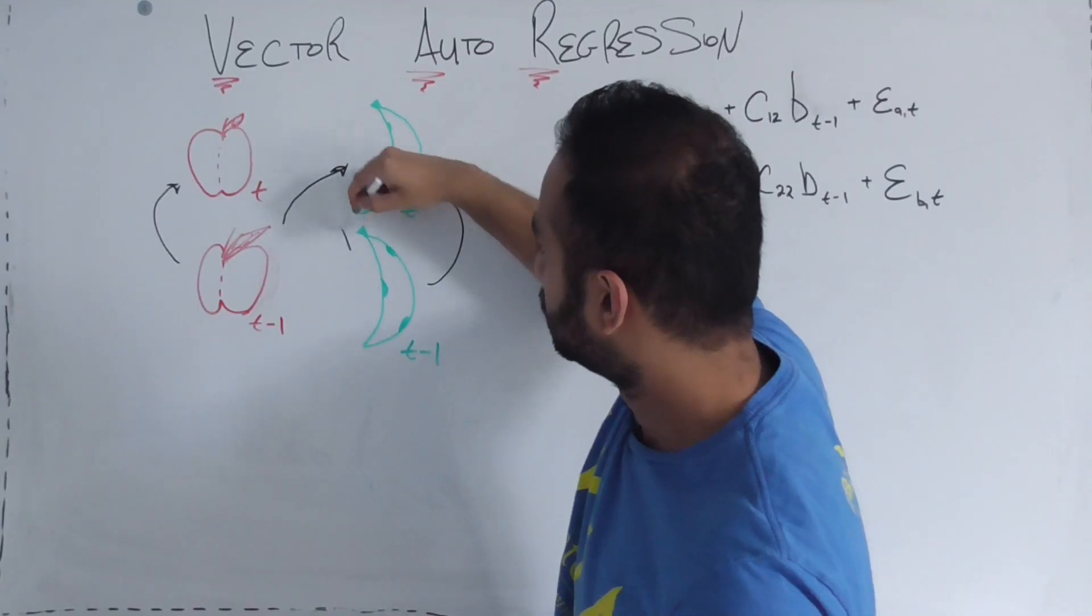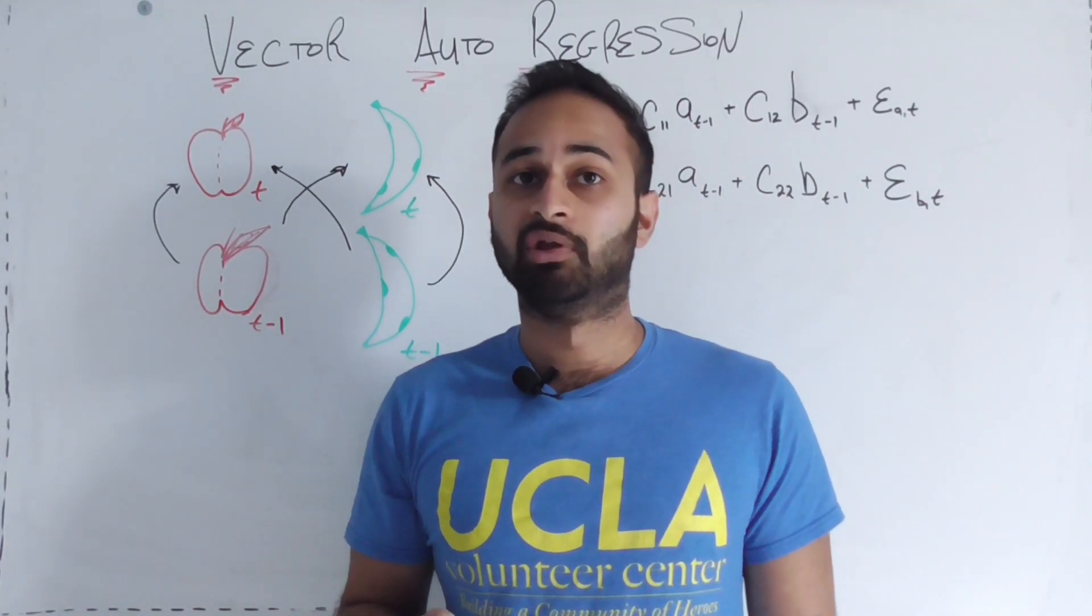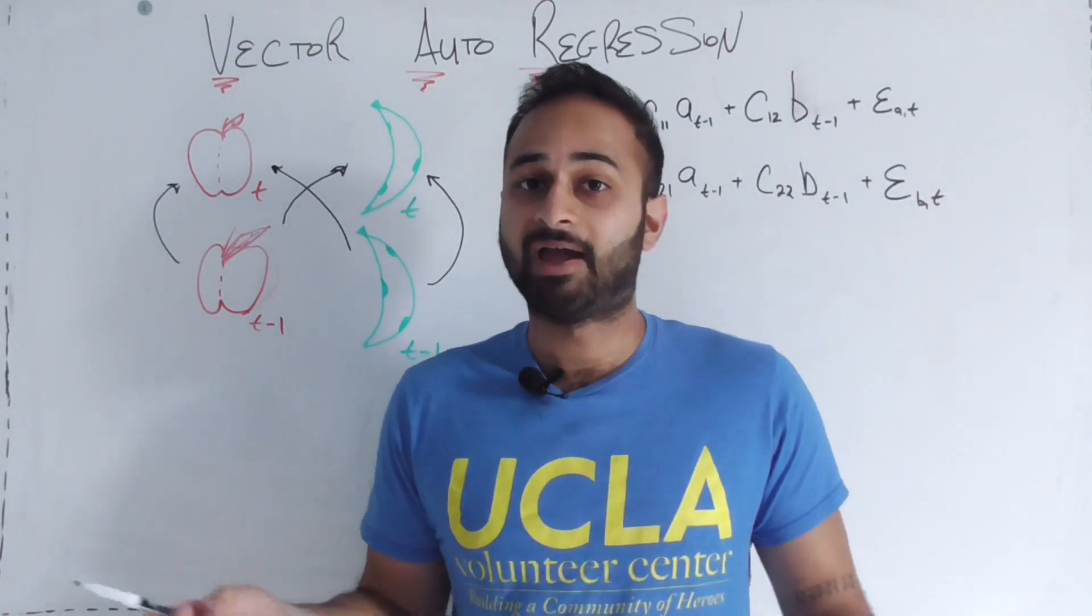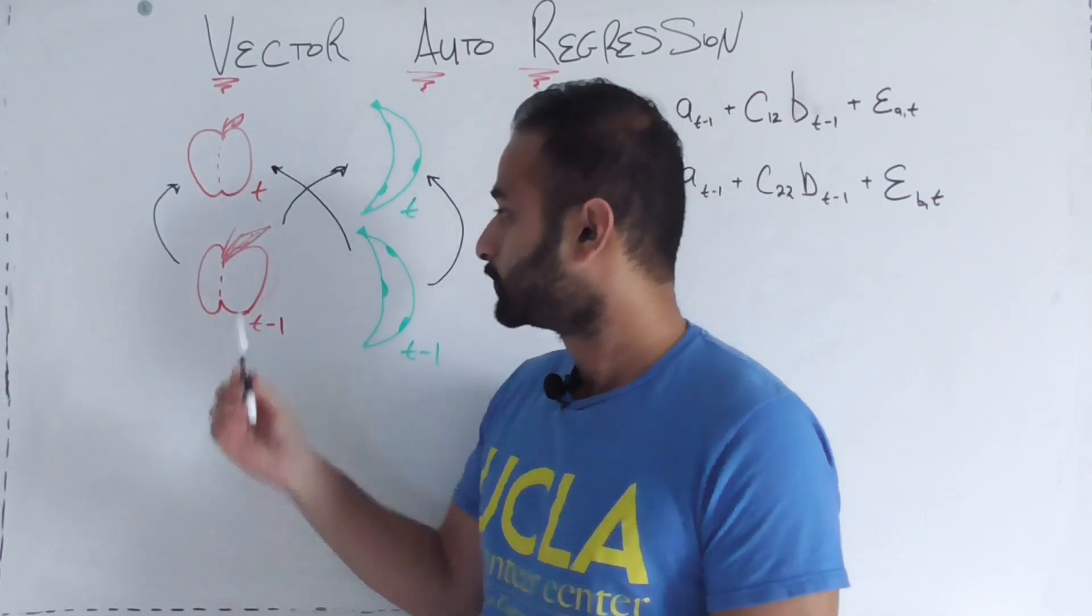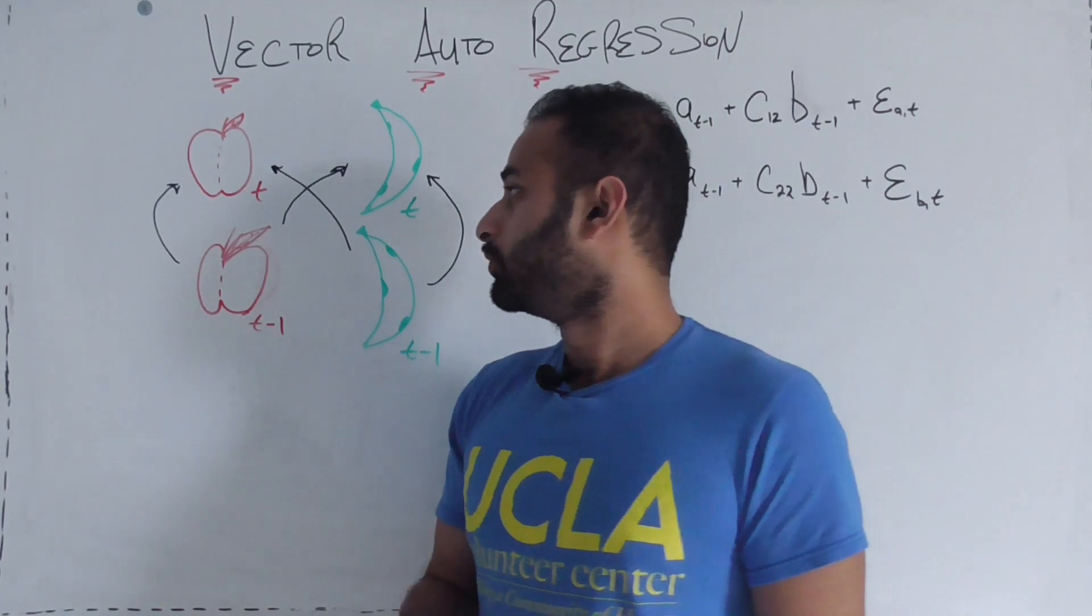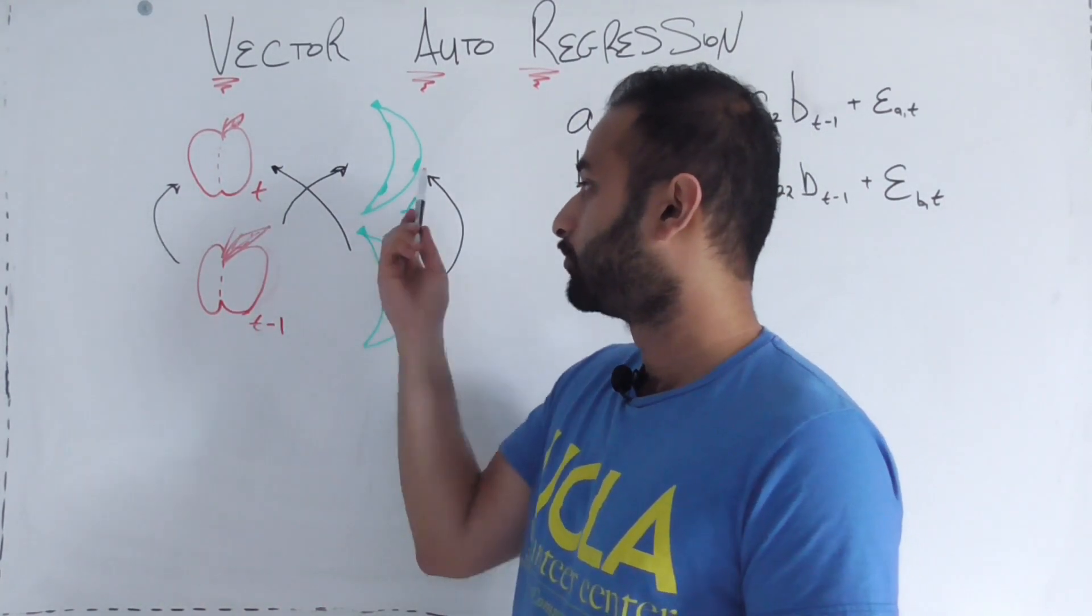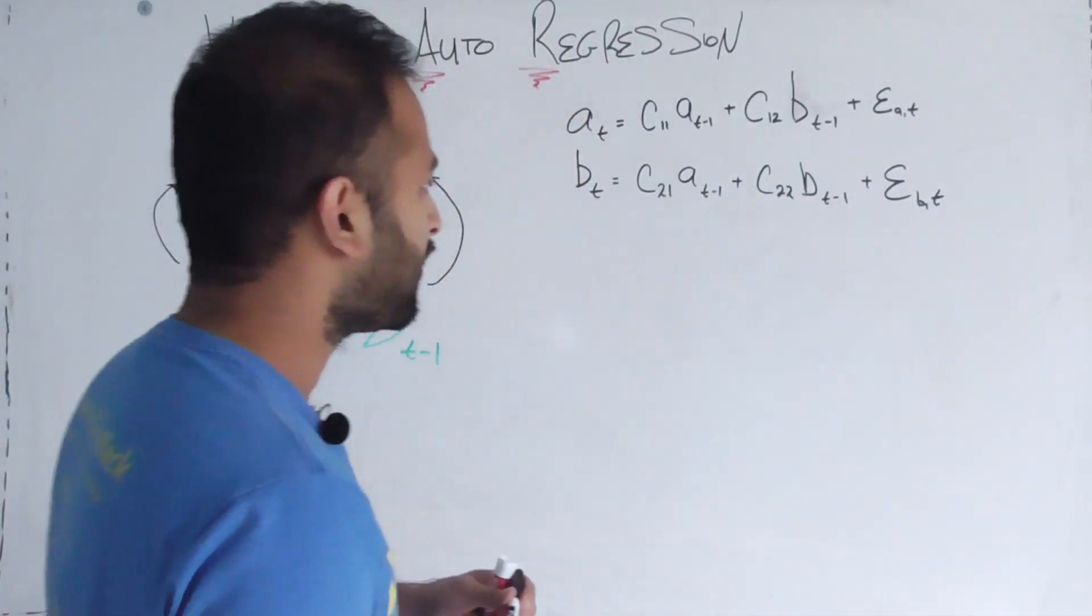Similarly, we can make a case for the number of bananas you sold last month affecting the number of apples you sell this month. If banana sales are really low last month, then maybe apple sales will be high this month because people tend to not favor bananas anymore and like apples instead. So we have these four different arrows which could be possible factors affecting the number of apples and bananas sold this month.